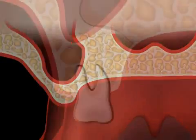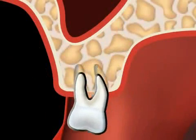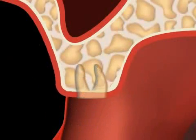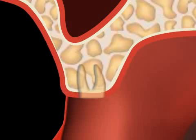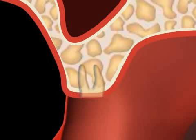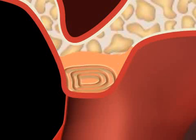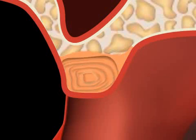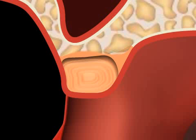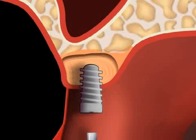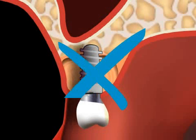Sometimes a so-called flabby ridge forms. This is an alveolar ridge consisting of connective tissue, usually observed when the osseous alveolar ridge regresses at a very quick rate, for example due to an ill-fitting dental prosthesis. In such cases, often a fibrous ridge remains, and is unfortunately not suitable for an implantation.